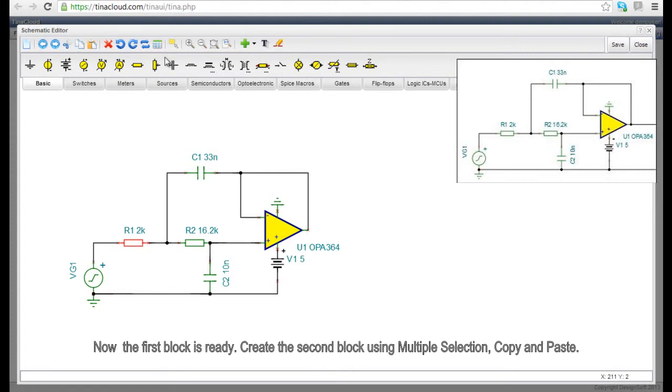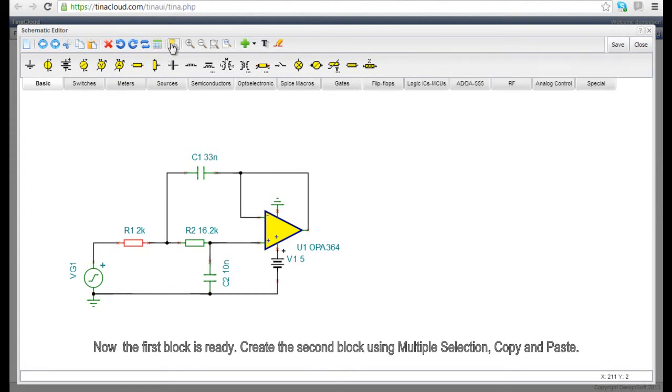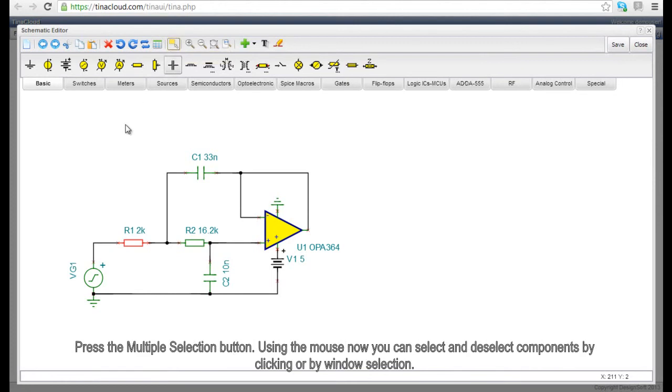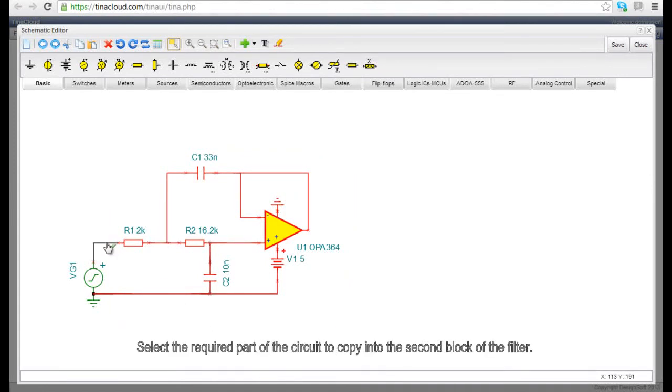Create the second block using multiple selection, copy and paste. Press the multiple selection button. Using the mouse, you can select and deselect components by clicking or by window selection. Select the required part of the circuit to copy into the second block of the filter.